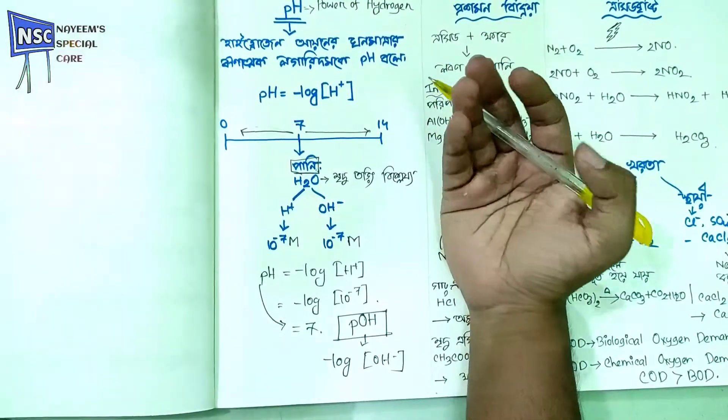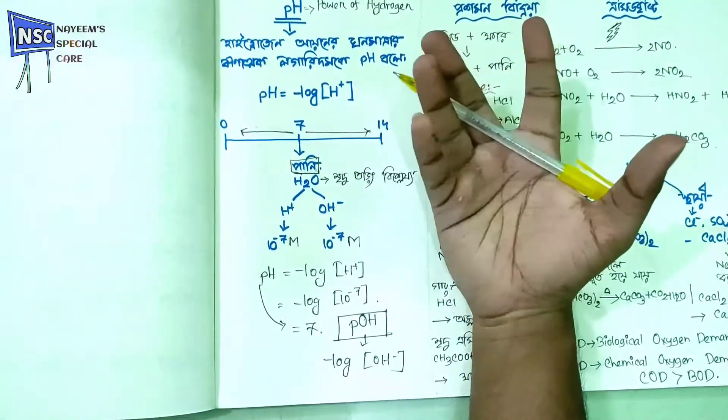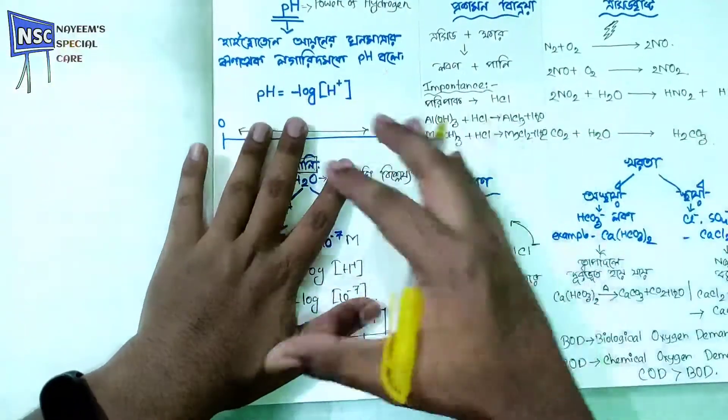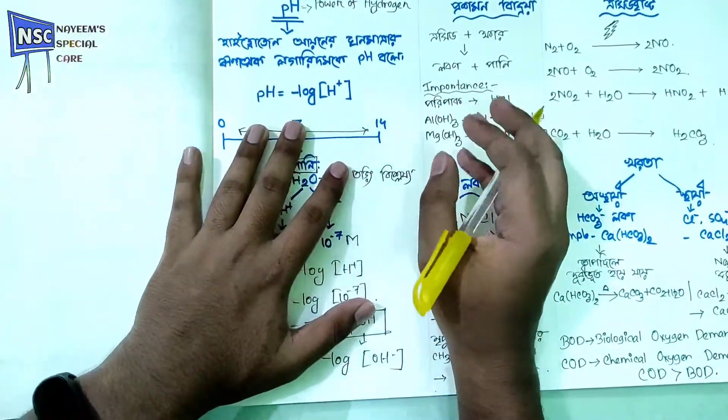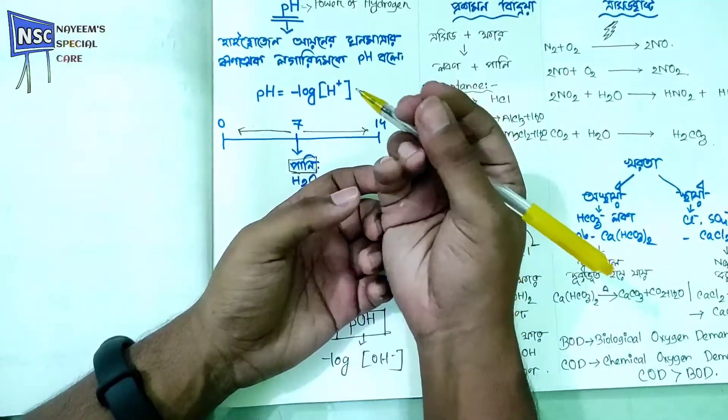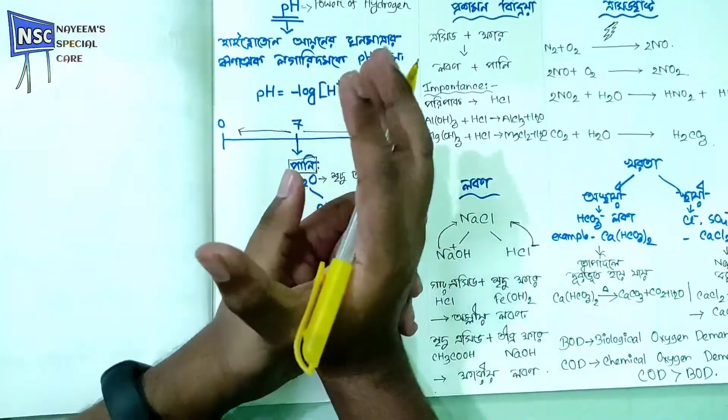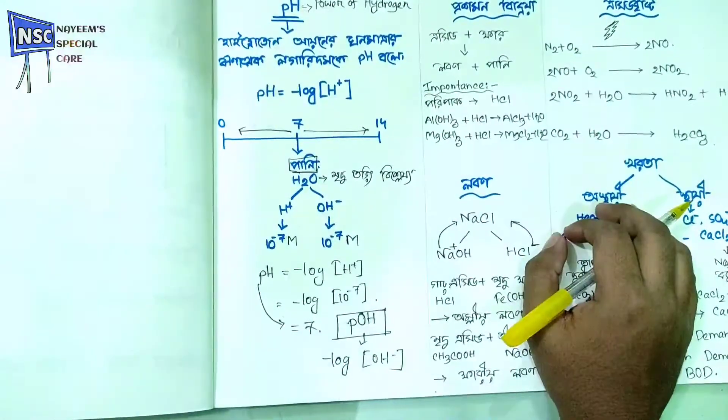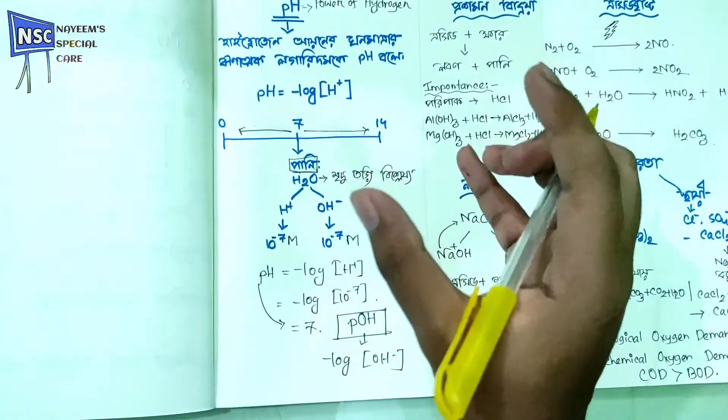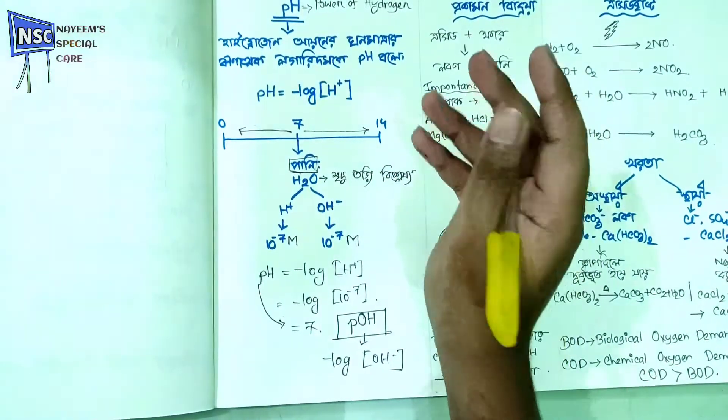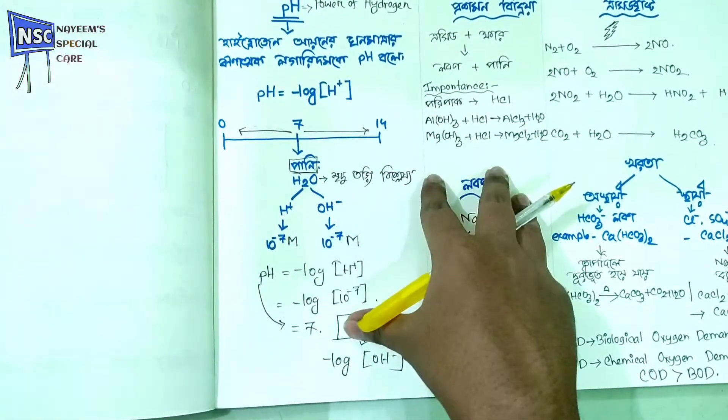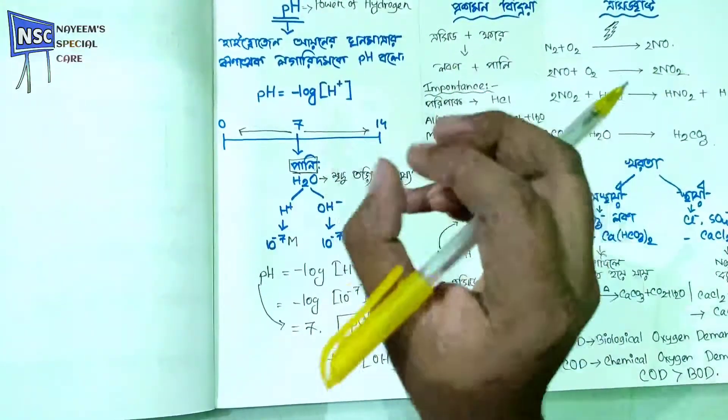You can use the pH meter, universal indicator, litmus paper, pH meter, etc. You can use the pH meter. There is electro, which has a drone, but you can use the digital display. Because you can give the pH meter, you can use the pH meter. So, it's a pH meter.